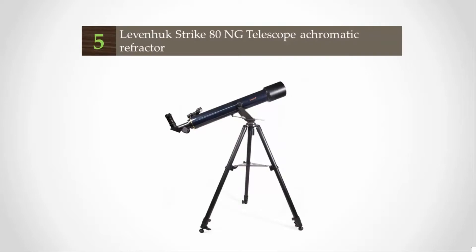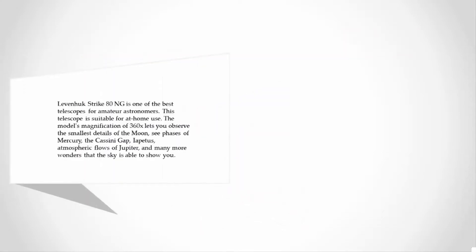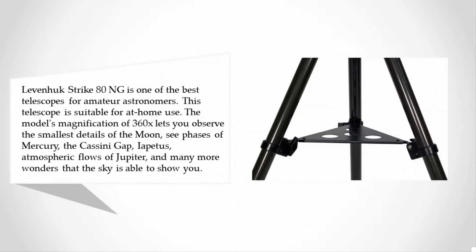Levenhuk Strike 80 NG is one of the best telescopes for amateur astronomers. This telescope is suitable for at-home use. The model's magnification of 360x lets you observe the smallest details of the moon, phases of Mercury, the Cassini Gap, Iapetus, atmospheric flows of Jupiter, and many more wonders that the sky is able to show you.